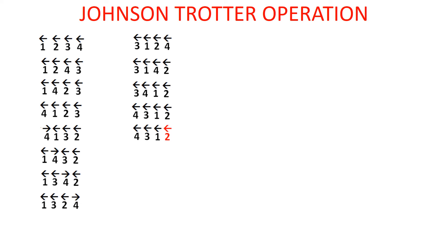Apply three steps. Here 2 is the only mobile component. So the largest mobile component is 2. Step 2: exchange 2 and 1. Step 3: digits 4 and 3 are both greater than 2, so reverse the arrows of both 4 and 3. We get a new permutation.